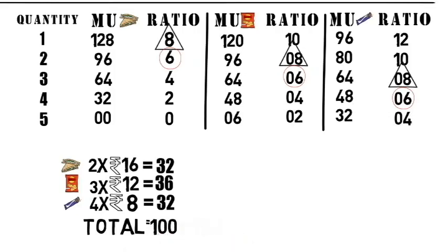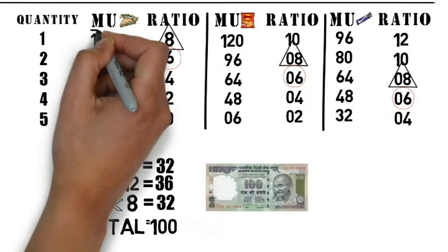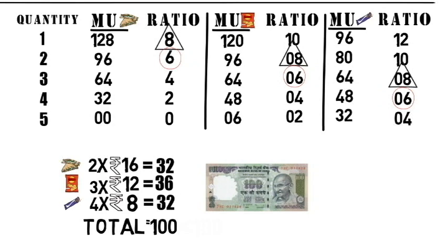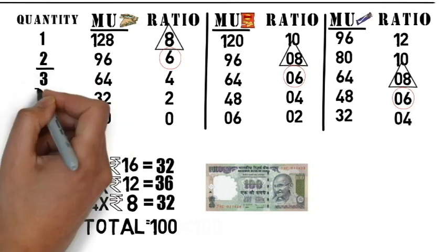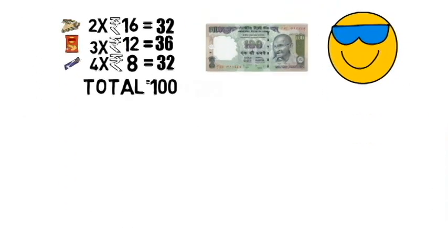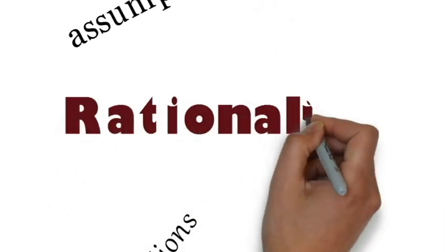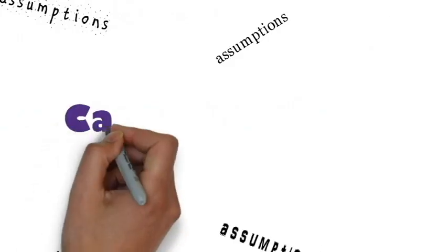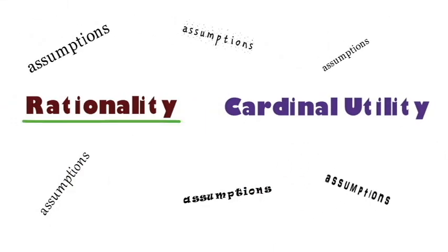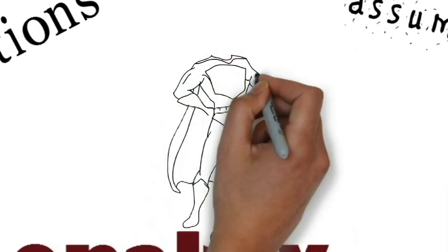So what does this mean? Remember our original question of how will your friend allocate Rs.100 to gain maximum satisfaction. Given Rs.100, your friend will buy 2 units of sandwich, 3 units of chips and 4 chocolates to gain maximum satisfaction. The law of equimarginal utility is based on many assumptions; the ones you need to know are rationality and cardinal utility. Rationality states that your friend is a completely normal person and does nothing superhuman or extraordinary.